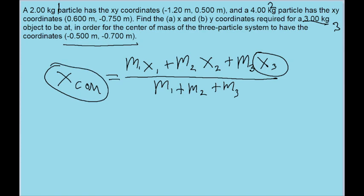this final x, is just going to be negative 0.5 meters, since that's supposed to be the final x position of the system's center of mass.